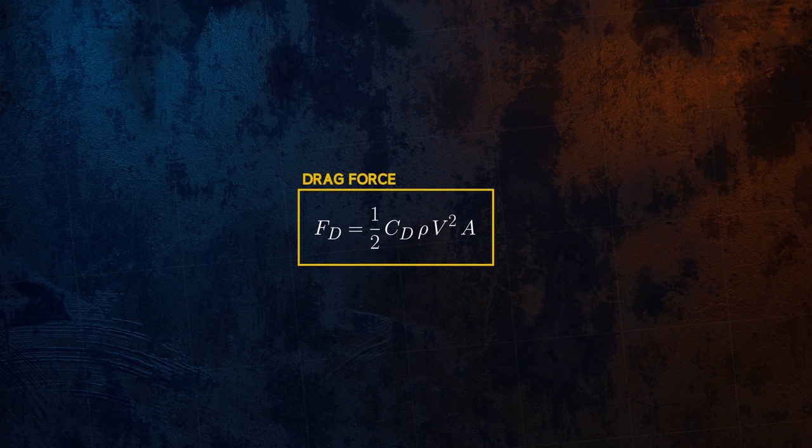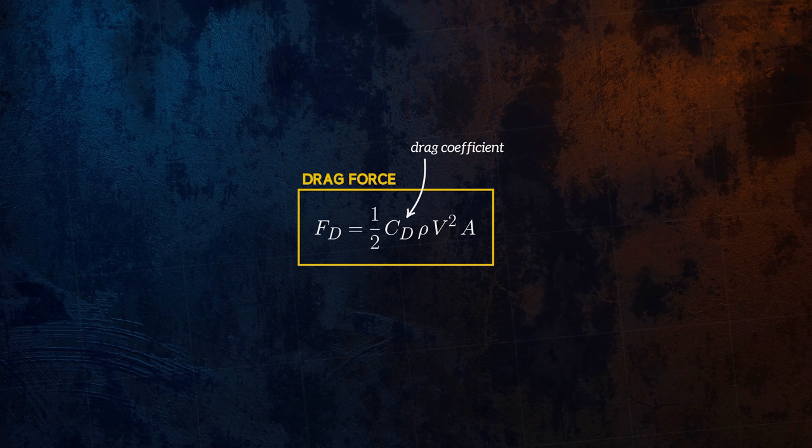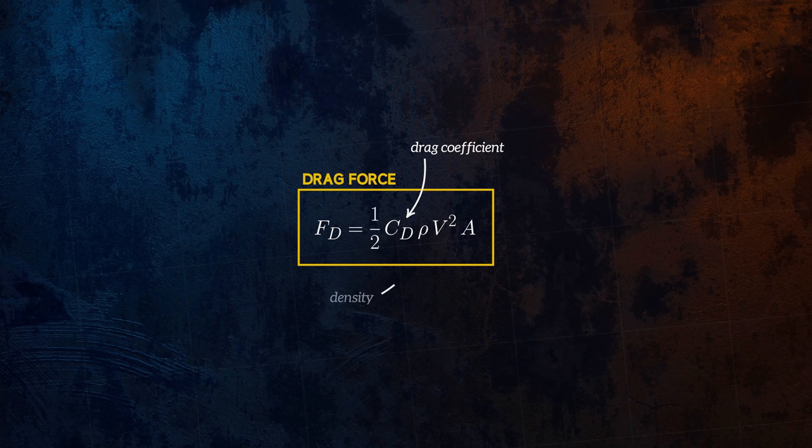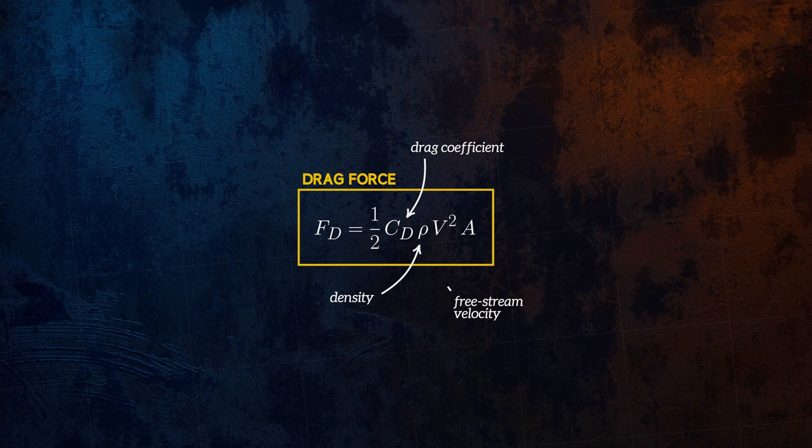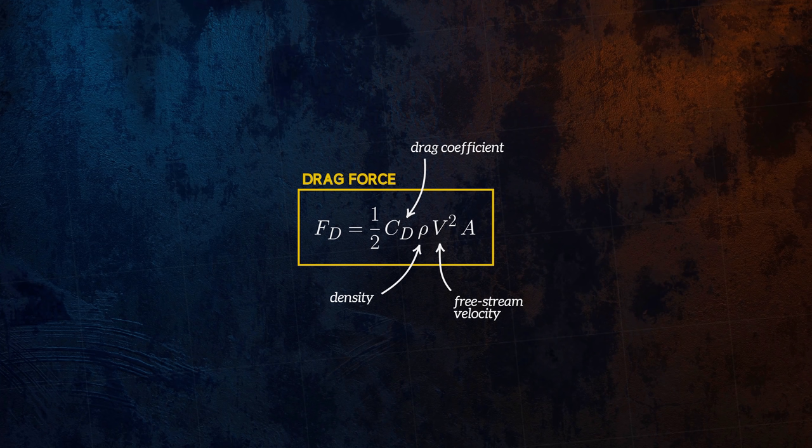The CD term is the drag coefficient. It captures all of the hard-to-measure parameters, like the effect of the geometry of the object or the effect of the flow regime, and can be determined either experimentally using a wind tunnel, for example, or by running numerical simulations. The other terms in the equation are the fluid density rho, the free stream velocity V, which is usually assumed to be steady and uniform, and A, which is a reference area that will depend on how the drag coefficient was determined.